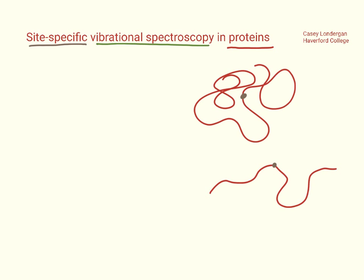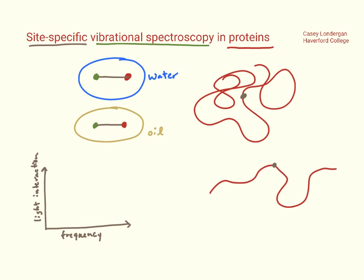The vibrational spectroscopy part is looking at how atoms vibrate inside molecules. Say we have two atoms connected by a chemical bond — these bonds can act like springs and they will vibrate at specific frequencies. If we put these atoms with this kind of bond into a couple of different environments, say water or oil, then the frequencies that the atoms vibrate at will be different, and we will see two different signals using light to interact with these atoms in two different environments.